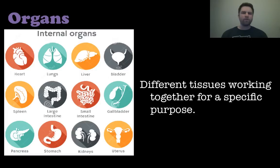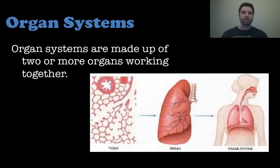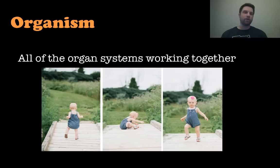If you get a whole bunch of tissues together that work together for a specific purpose, you make an organ like a liver, heart, or lungs. And when you get a bunch of those organs together, you make an organ system like the circulatory system or the respiratory system — that's when two or more organs are working together for a common goal. Put a whole bunch of organ systems together and you get an organism, which is the highest level of organization.